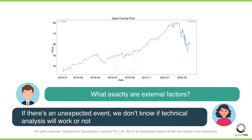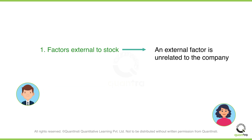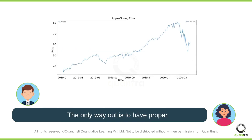An external factor is unrelated to the company. External factors can be events like Fed rate hikes, declaration of war, or issues in the supply chain, which can disrupt a stock price. The only way to protect your trade is to have proper risk management practices while trading.